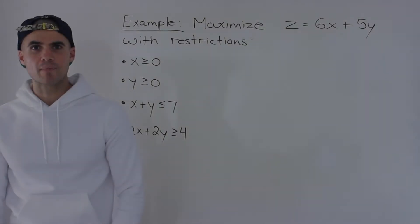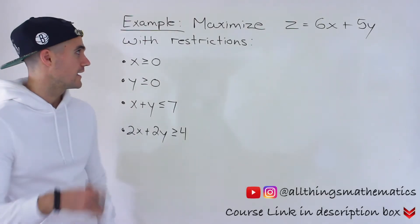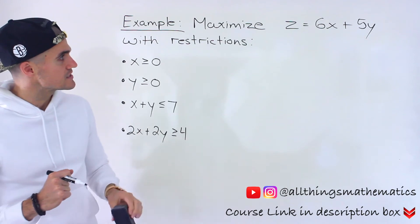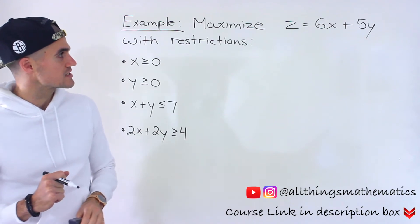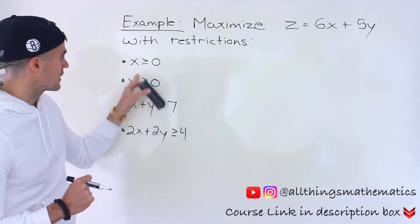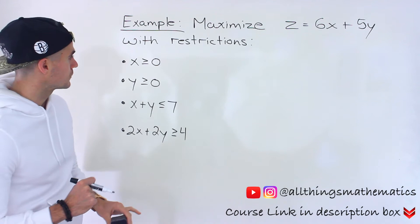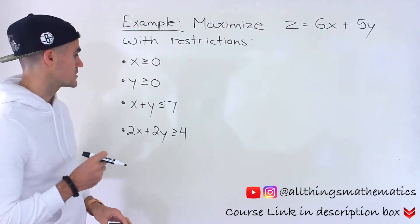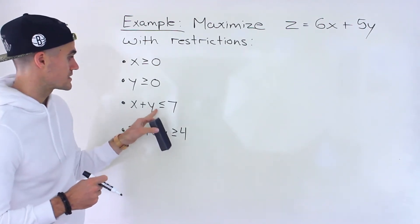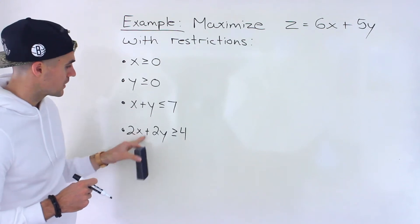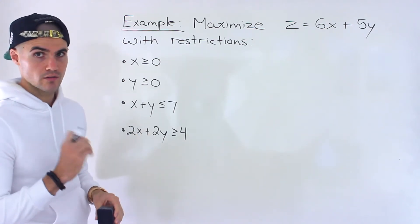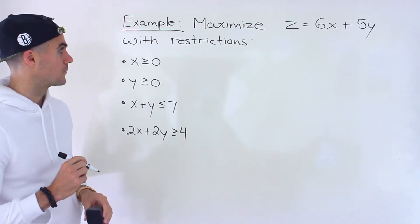Welcome back. In this next question, what we have to do is maximize z equals 6x plus 5y with these restrictions: x is greater than or equal to zero, y is greater than or equal to zero, x plus y is less than or equal to seven, and 2x plus 2y is greater than or equal to four.